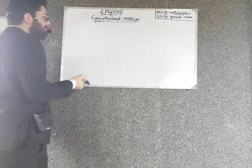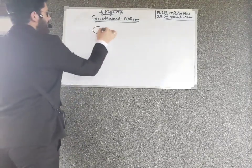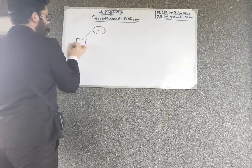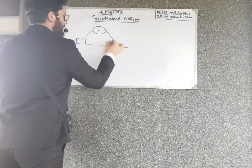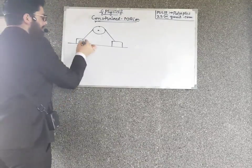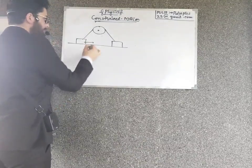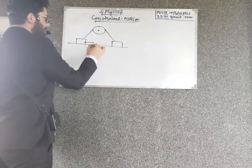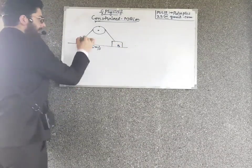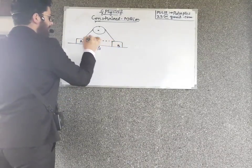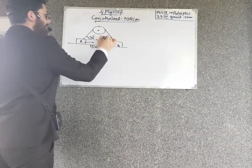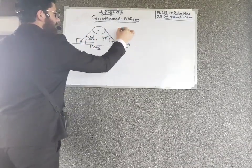Let me discuss one more problem. Here I have a pulley, block A connected to block B via a string over the pulley. The velocity of block A is 15 meters per second. The string makes an angle of 30 degrees on block A's side, and 45 degrees on block B's side. The question is: find the velocity of block B.